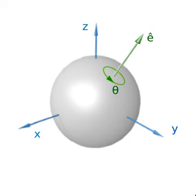In two dimensions, to carry out a rotation using a matrix, the point (x, y) to be rotated counterclockwise is written as a column vector, then multiplied by a rotation matrix.